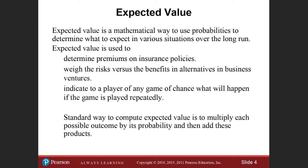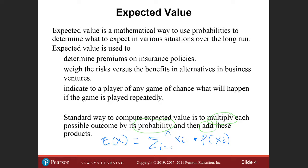The way to compute expected value is to multiply each possible outcome by its probability and then add the products. The formula for expected value — a predicted value — is: E(X) equals the summation from i equals one to n of X_i times the probability of X_i.